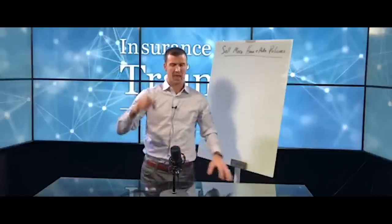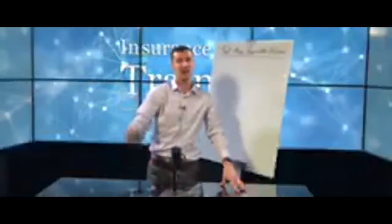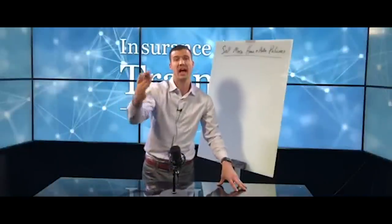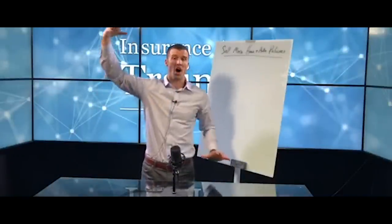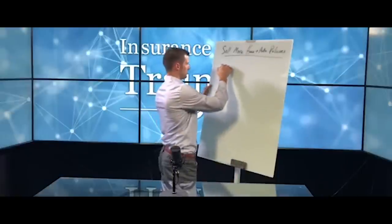Today's topic is a big one. We get asked questions a lot about this. Agents are asking, how do I sell more home and auto insurance policies? I sell home and auto, PNC, property and casualty. How do I sell more of it? So we're going to cover three different segments in today's show.